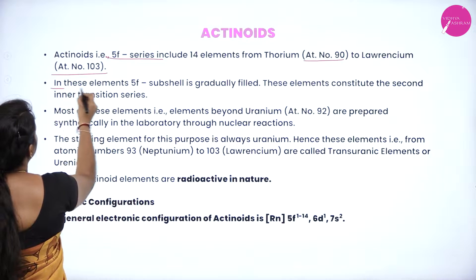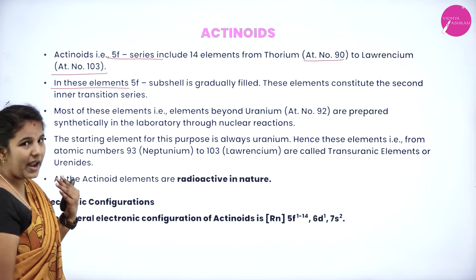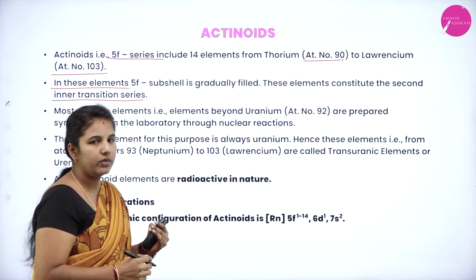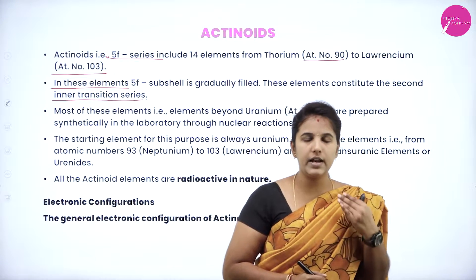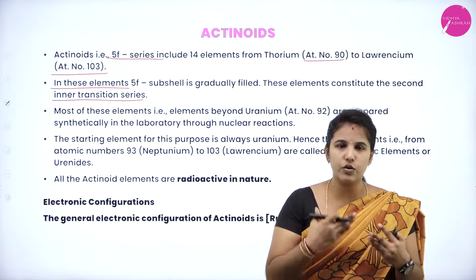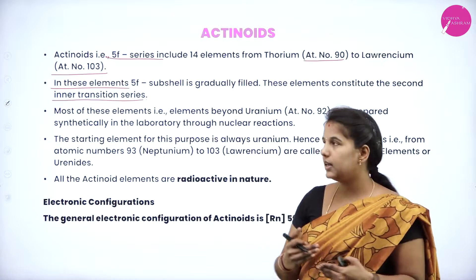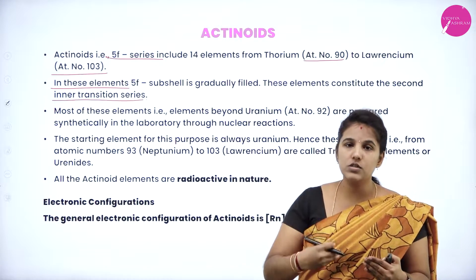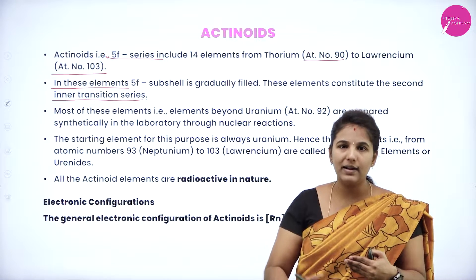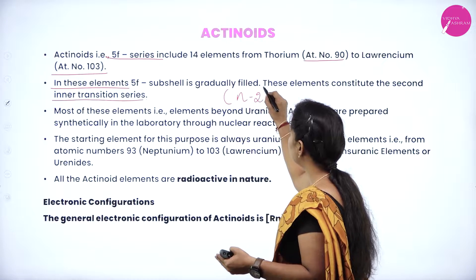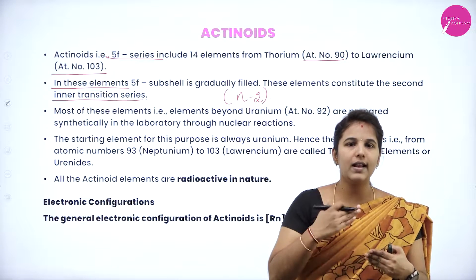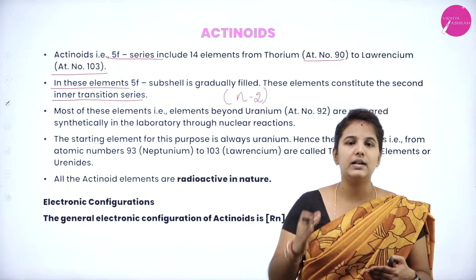These elements have 4F subshells gradually filled and constitute the second inner transition series. In the lanthanide series, the last electrons enter the penultimate shell — the anti-penultimate shell. But in the case of this 5F series, the last electron also goes to the innermost anti-penultimate shell. That is why we write it as n minus 2, because it goes to the innermost shell.